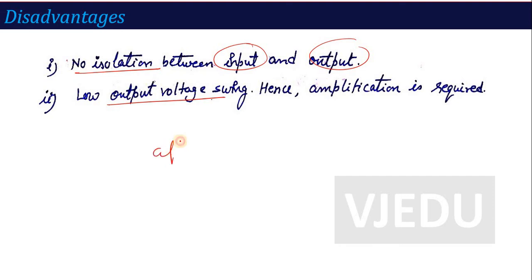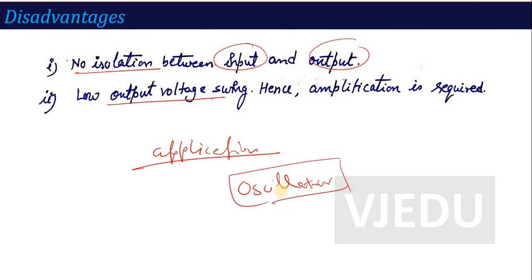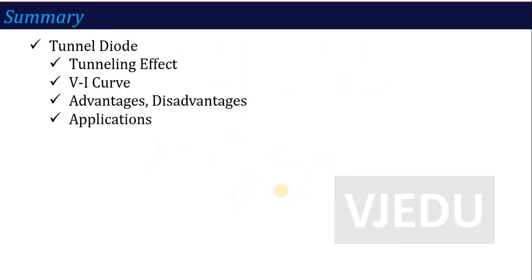In terms of applications, the tunnel diode is used as an oscillator and has been widely used in electronics engineering. The main topic for examination questions is: what is the reason behind the negative differential resistance, or why does current decrease with increasing forward voltage in a tunnel diode? This tunneling effect is an important concept on which different types of questions are asked.